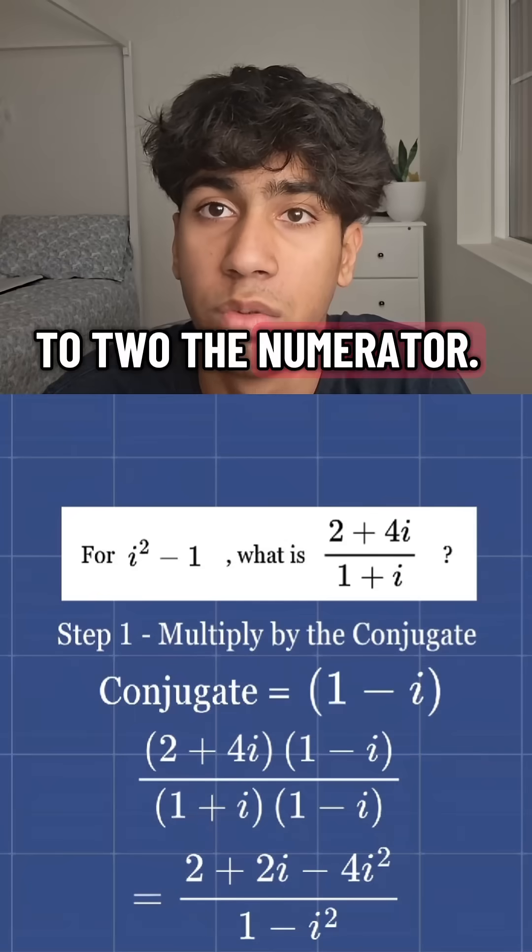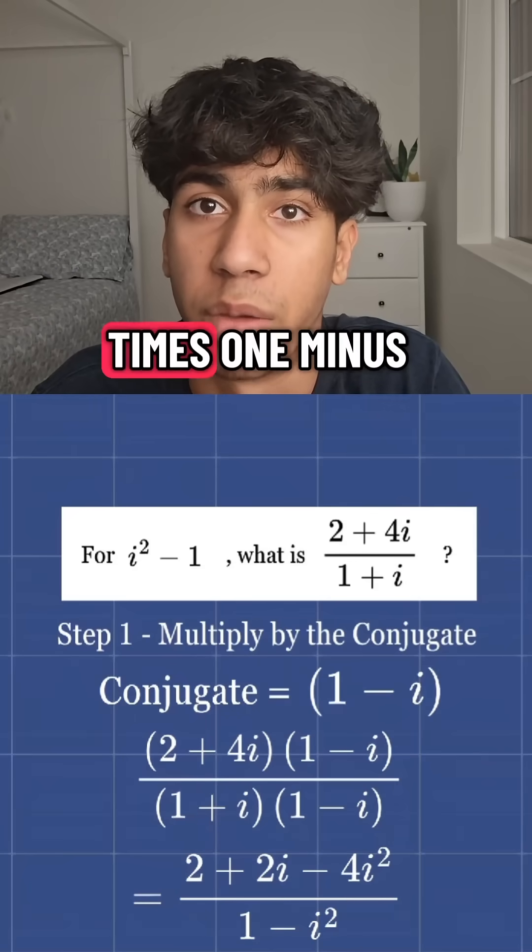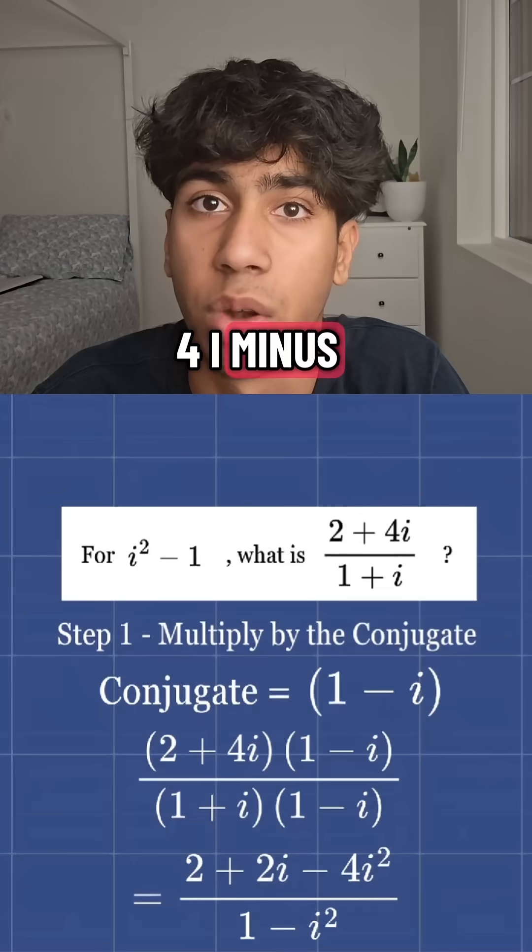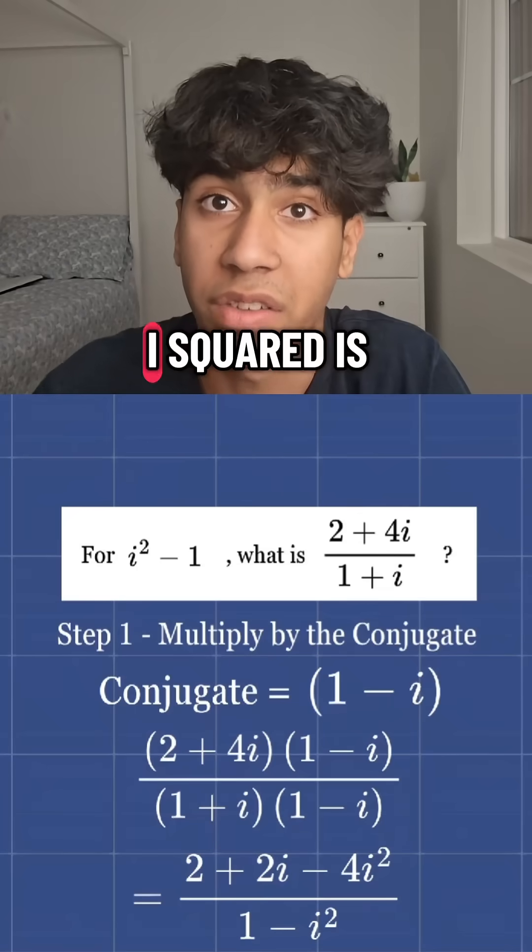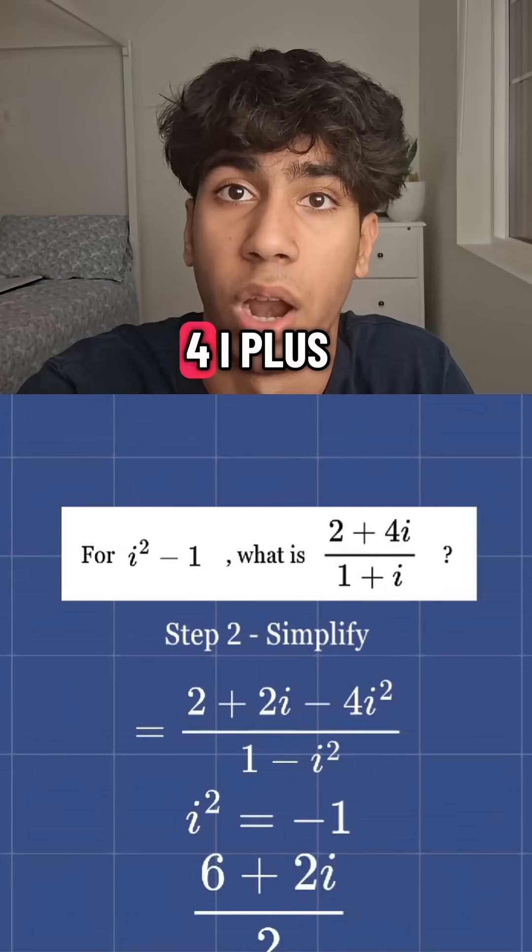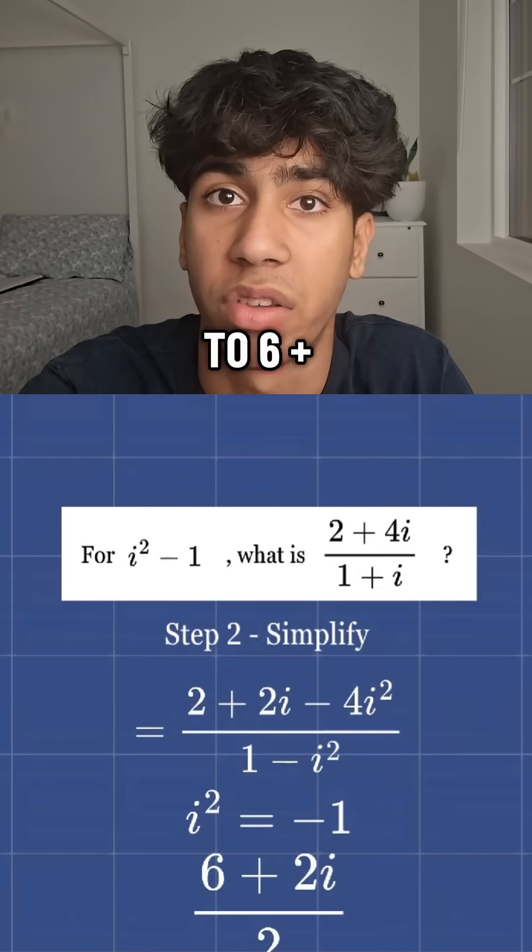The numerator 2 times 1 minus i plus 4i times 1 minus i is equal to 2 minus 2i plus 4i minus 4i squared. Since i squared is equal to negative 1, that's 2 minus 2i plus 4i plus 4 is equal to 6 plus 2i.